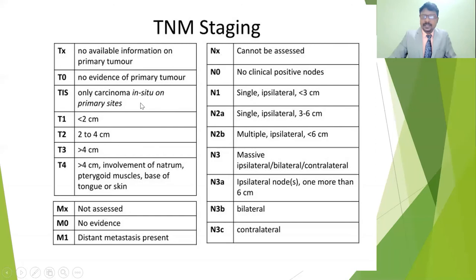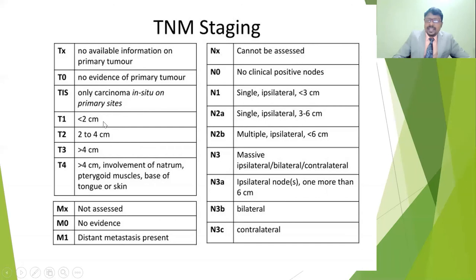T4 means more than 4 centimeters with involvement of structures such as the rectum, pterygoid muscles, base of the tongue, and skin. When the tumor exceeds 4 centimeters and involves these associated muscles, tongue, or skin, the staging is classified as T4.